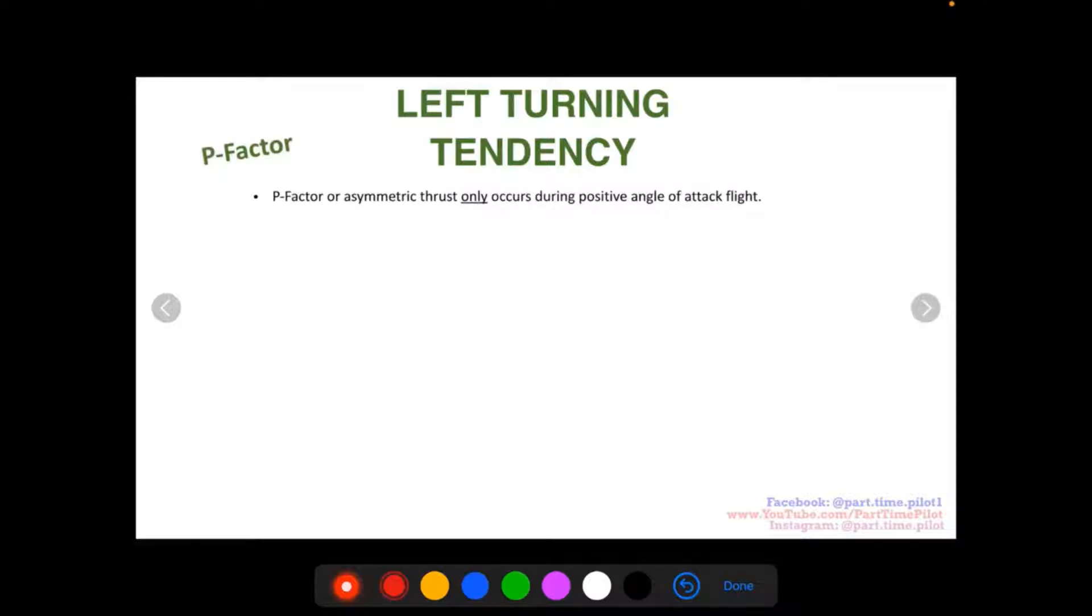So the first factor I want to talk about is called P-factor or asymmetric thrust. So asymmetric means you don't have equal thrust on the left and right side. It's asymmetric. And this only occurs during positive angle of attack flight, so again, in like our climb out.